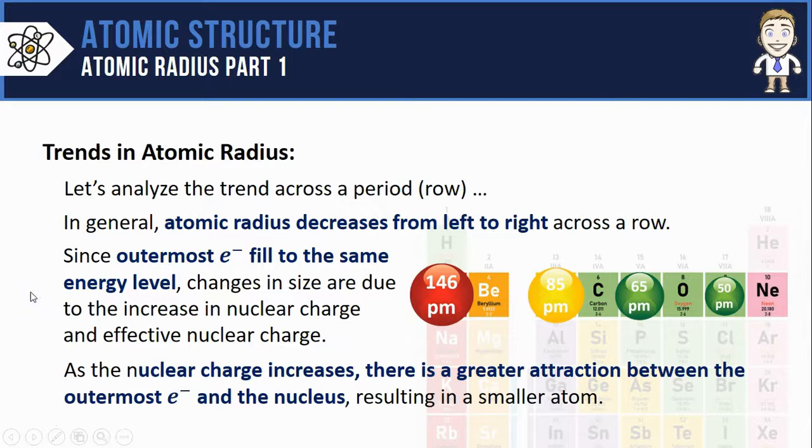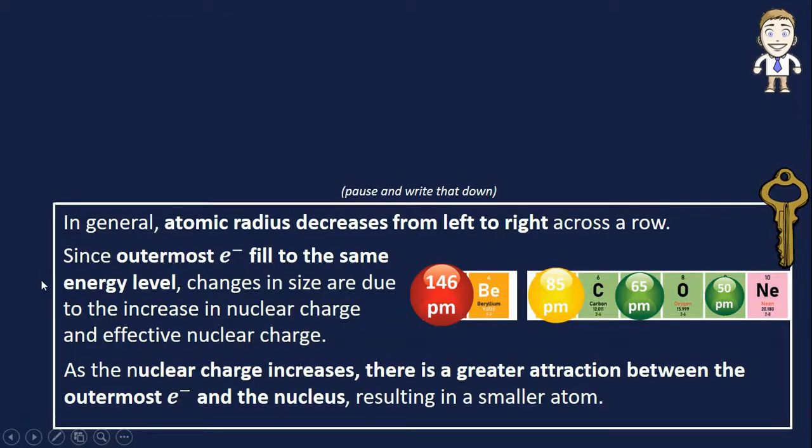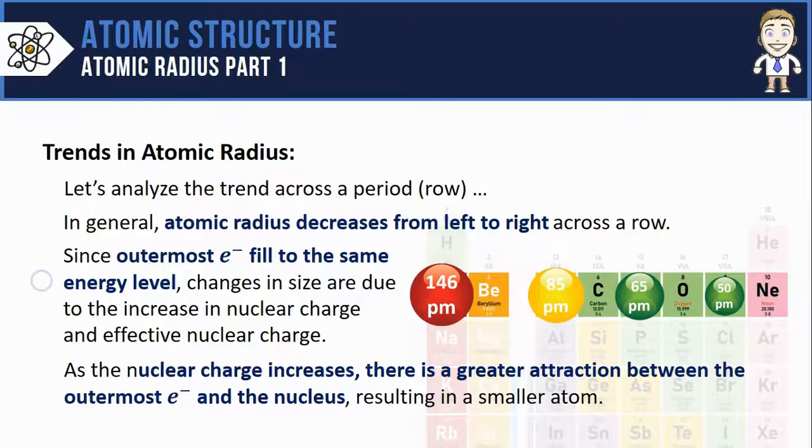As those nuclear charges increase, there's a greater attraction between the outermost electrons in the nucleus, resulting in smaller atoms. These are definitely some key ideas for this video, make sure you jot them down.